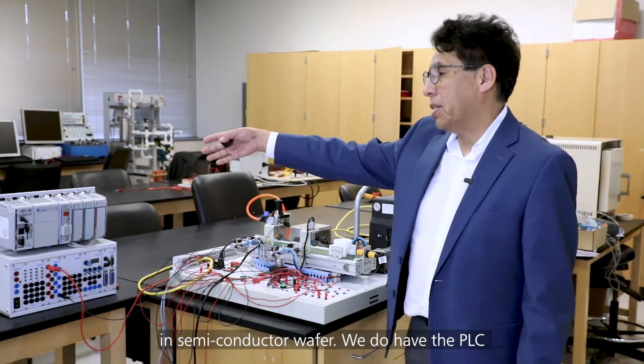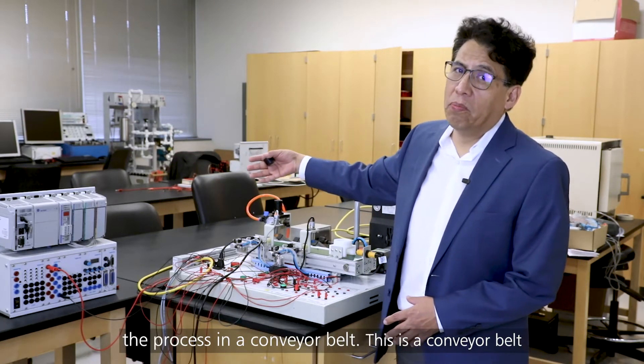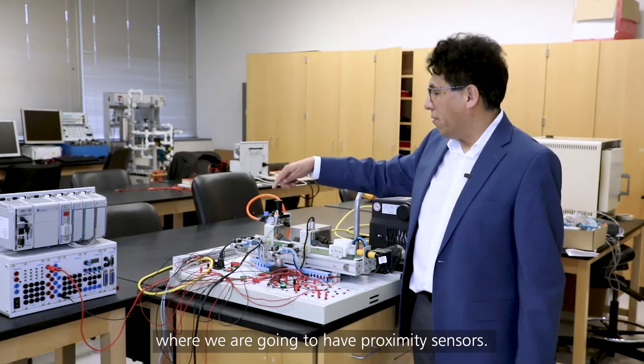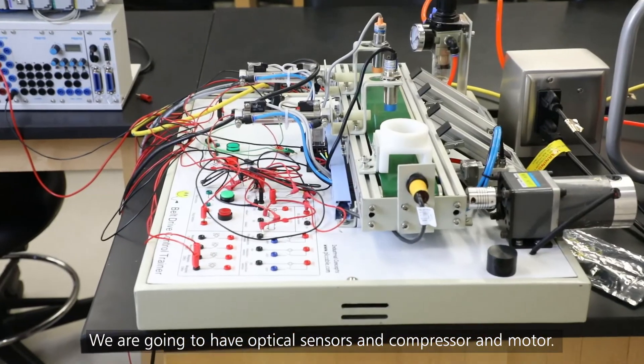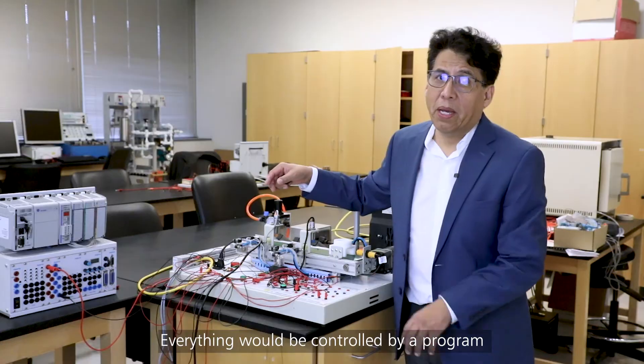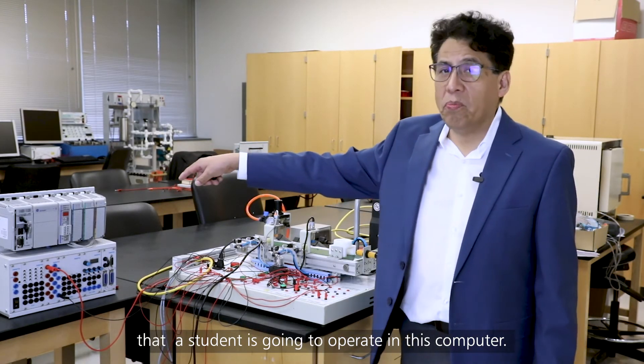We do have a PLC, which is an industrial computer that is going to control the process in a conveyor belt. This is a conveyor belt where we are going to have proximity sensors, optical sensors, a compressor, a motor, and everything will be controlled by a program that the student is going to operate in this computer.